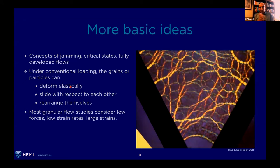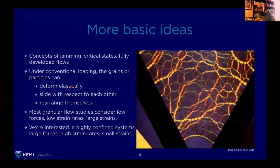Most granular physics studies think about low forces where everything stays elastic, low strain rates, and large strains. The classical problem was tobacco being put through hoppers to fill cigarettes — the tobacco would jam. That's the classical problem that initiated this kind of work. We, on the other hand, in mechanics, are interested in big impact problems — protective systems, asteroids, the moon. For these big systems, we typically have highly confined systems, large forces, large strain rates, and small strains. We're operating in a domain where granular physics isn't usually at play, but that's where we sit.